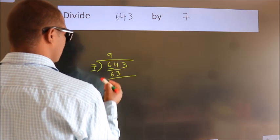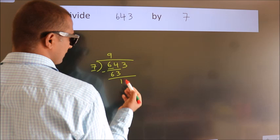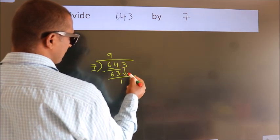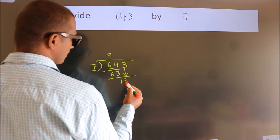Now we should subtract. We get 1. After this, bring down the beside number. So 3 down, so 13.